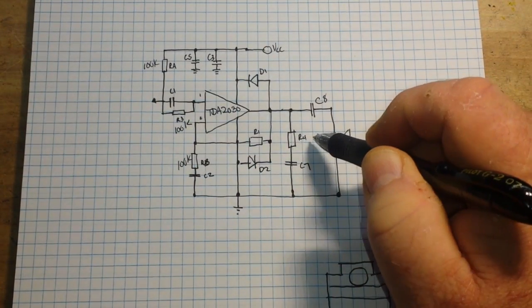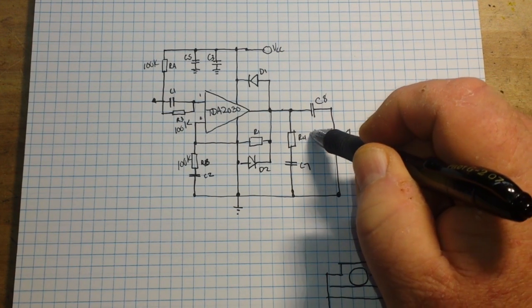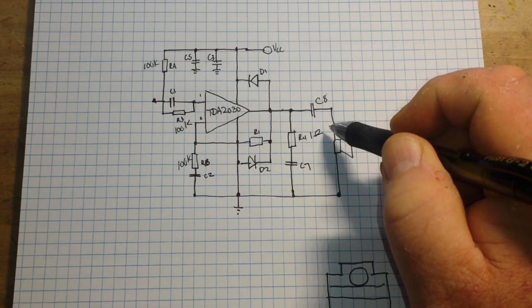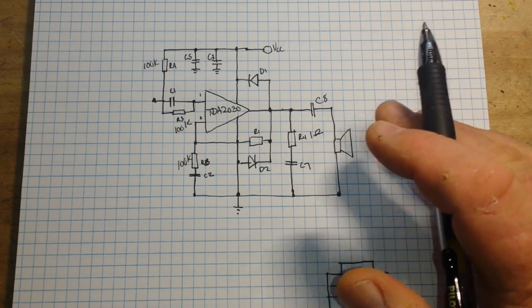Now R4, this one over here, is for frequency stability, and it is just going to be one ohm. So the reason that we want to have that is just to keep everything stable.